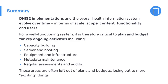To summarize, DHIS2 implementations, along with the overall health information system, evolve and change over time — the scale is growing, the scope is growing, the content of the system is changing, and there are new functionality and new users. To have a DHIS2 implementation that is well-functioning and sustainable over time, it's critical to have a plan and a budget for the key maintenance activities: capacity building, server and hosting, equipment and infrastructure, metadata maintenance, and regular assessments. These areas are often left out of plans and budgets and get deprioritized in favor of more exciting new implementations, but they are critical for a well-functioning DHIS2.